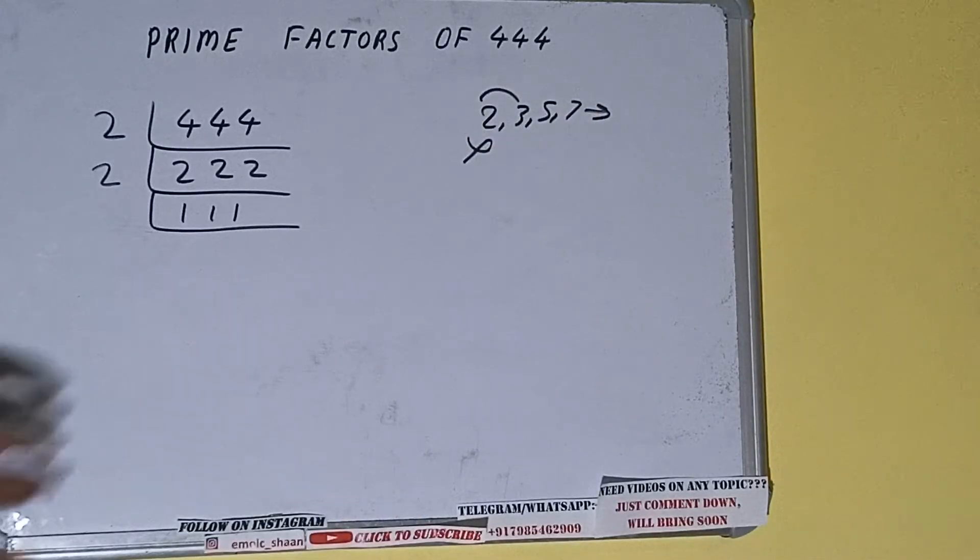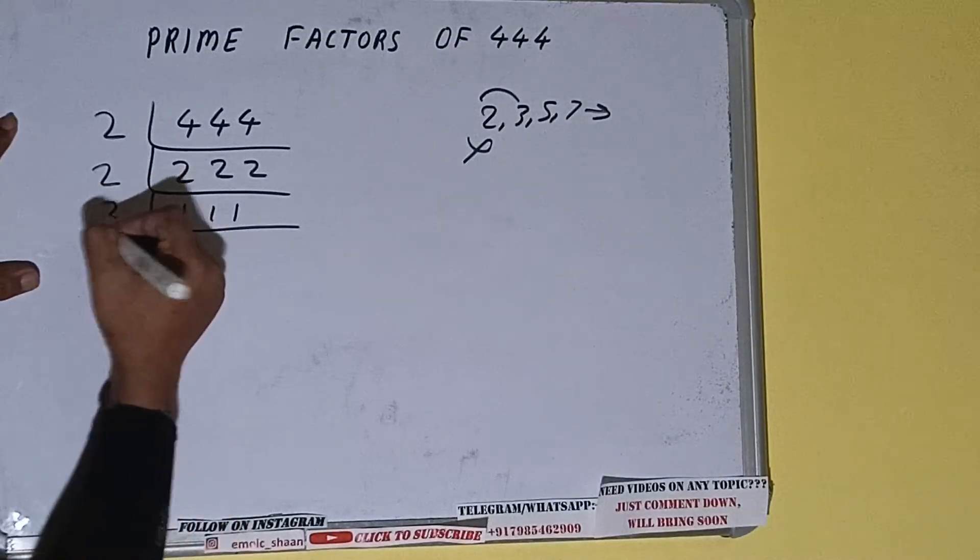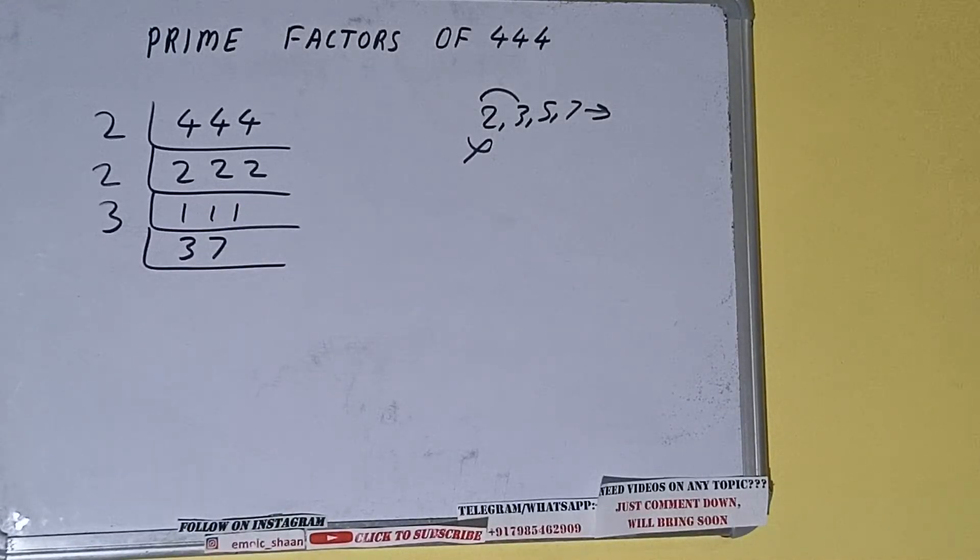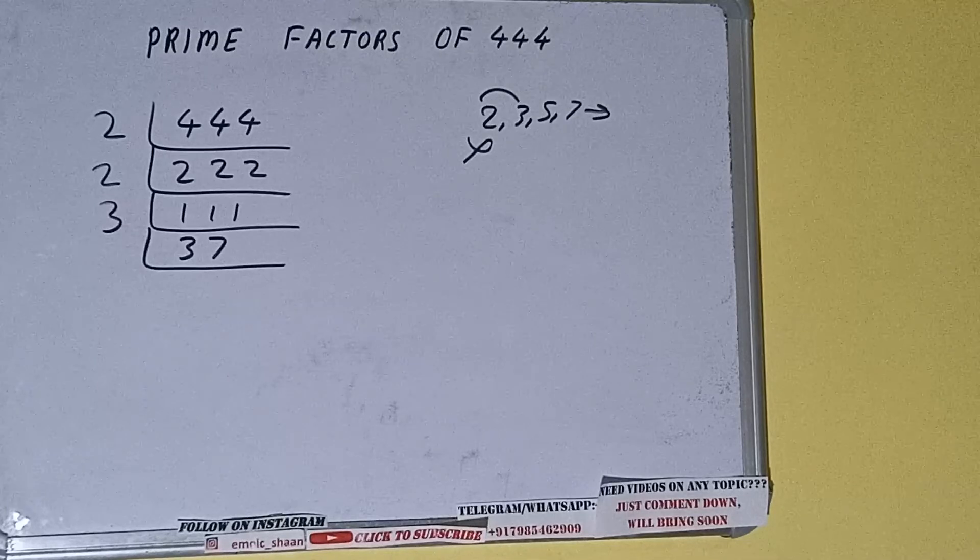That is 3. 3 times 3 is 9, 2 times 1, yes it is divisible by 3. So divide it. 3 times 3 is 9, 3 times 7 is 21. We'll be having 37, and 37 is further not divisible by 3.